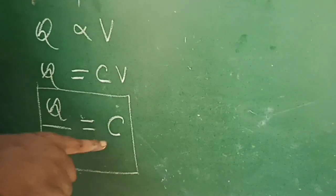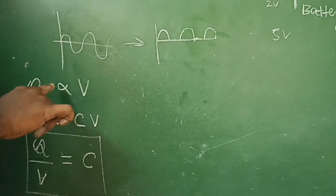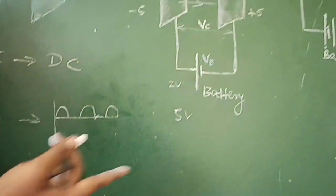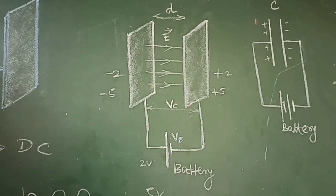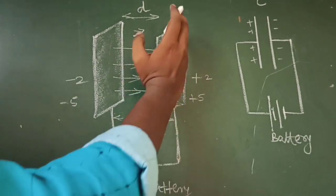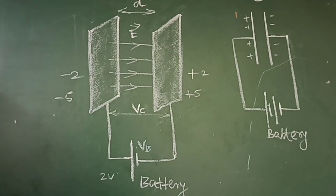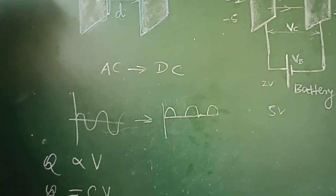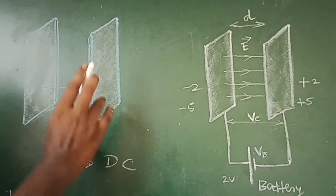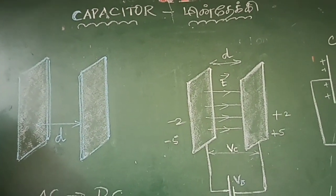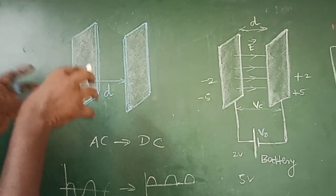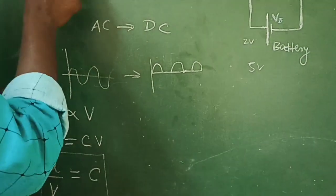C is the capacitance, and C = Q/V, where Q is proportional to V and C is the physical constant. Physical quantities like length and area affect capacitance — if the length or area increases, the stored charge increases. So Q/V = C is the capacitance of a capacitor.